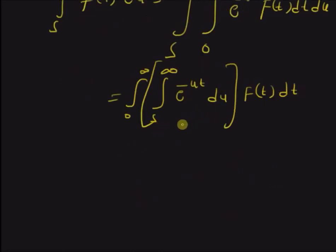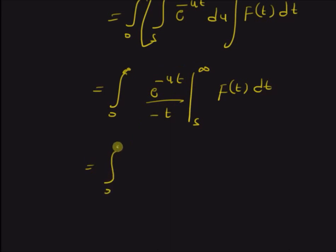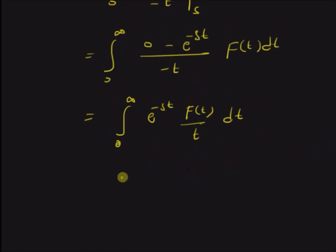The inner integral is equal to e to the power minus u t divided by minus t, with the limits from s to infinity, times f of t dt. This value is clearly equal to 0 for the first term and minus e to the power minus s t for the second term, divided by minus t, times f of t dt. This is equal to the integral from 0 to infinity of e to the power minus s t times f of t over t dt. Clearly, this is equal to the Laplace transform of f of t over t.